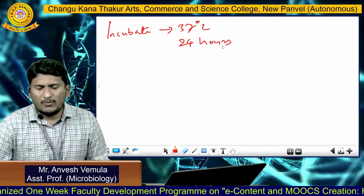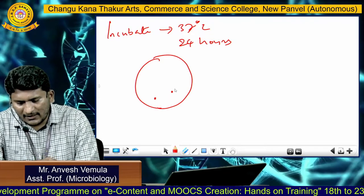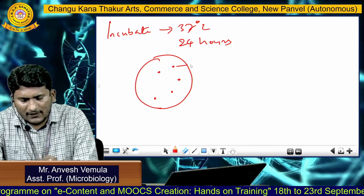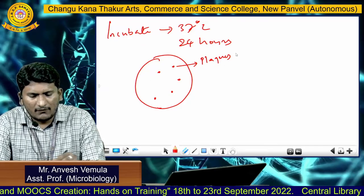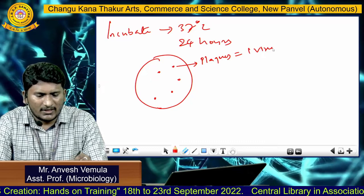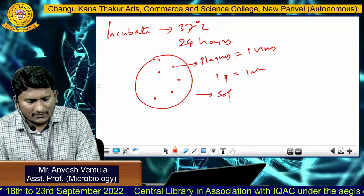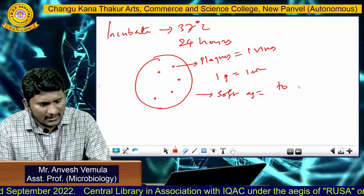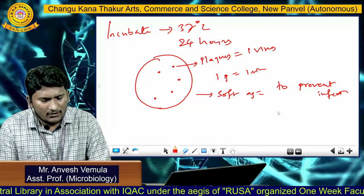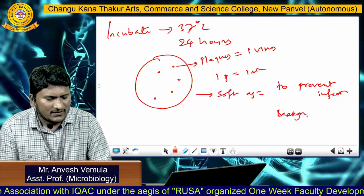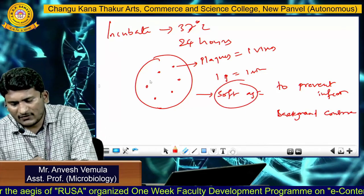After the incubation, on the next day you will find clear zones on the media surface where the infection has been completed — these clear zones are called plaques. One plaque is assumed to equal one virus particle. The role of soft agar is to prevent infection spreading to new bacterial cells and to provide background contrast so that the plaques can be visualized very clearly.